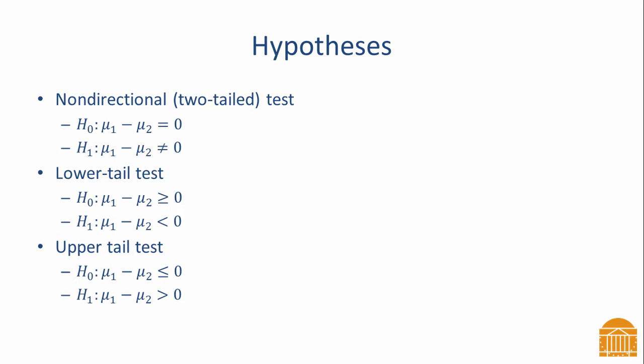For a lower tail test, the alternative hypothesis states that the mean for group one is less than the mean for group two — that is, subtracting mu two from mu one gives a negative number. The null hypothesis indicates that the difference of means is zero or positive, meaning mu one is equal to or larger than mu two. For an upper tail test, the alternative hypothesis states that the mean for group one is greater than the mean for group two, giving a positive number. The null hypothesis indicates that the difference of means is zero or negative, meaning mu one is equal to or smaller than mu two.